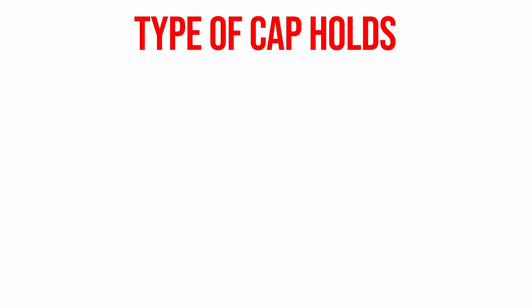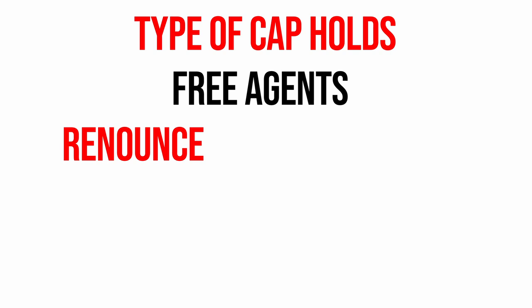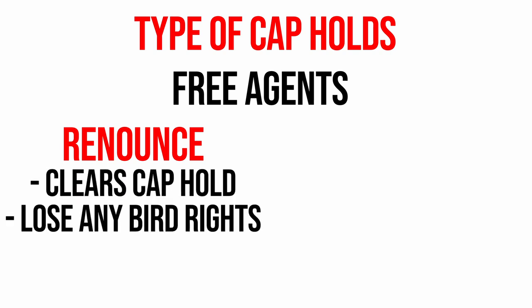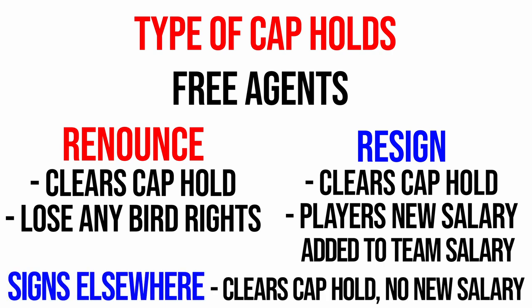The very first cap hold we need to talk about is free agents. Every team's free agents that offseason will carry a cap hold until that player is either renounced by that team — meaning you give up the rights to re-sign them, though you can still re-sign them if you have cap space or another exception — or you re-sign that player, in which case the new contract takes over for the cap hold amount, or the player signs with another team, in which case the cap hold disappears from your books.